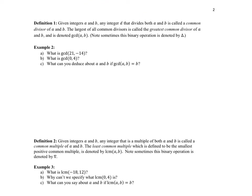Before we use unique prime factorization to find the greatest common factor and least common multiple, let's give solid definitions. If we're given integers A and B, an integer that divides both A and B — or is a factor of both — is called a common divisor or common factor. The largest of all of these is called the greatest common factor, denoted GCD or GCF.